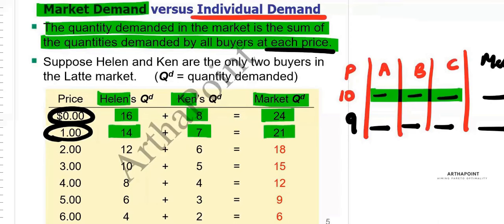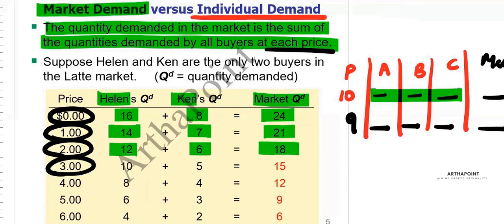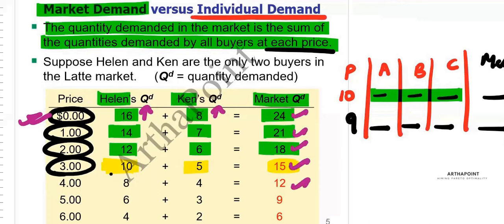At $2, Helen demands 12 and Ken demands 6. At $3, Helen demands 10 and Ken demands 5. So for each price, when we add the quantity demanded by different individuals, we get the market demand for each price. This is known as the market demand — it is basically summing the quantity demanded by each buyer together.